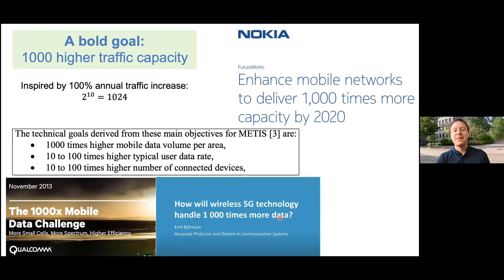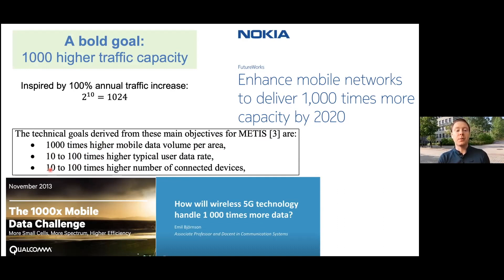There were joint European-funded efforts about five to ten years ago in a project called METIS, where they set out the goal for 5G to deliver a thousand times higher mobile data volume per area. That should be achieved by having 10 to 100 times higher typical data rate per user and 10 to 100 times more connected devices. If you multiply 10 with 100, you get 1000 - so that makes good sense.